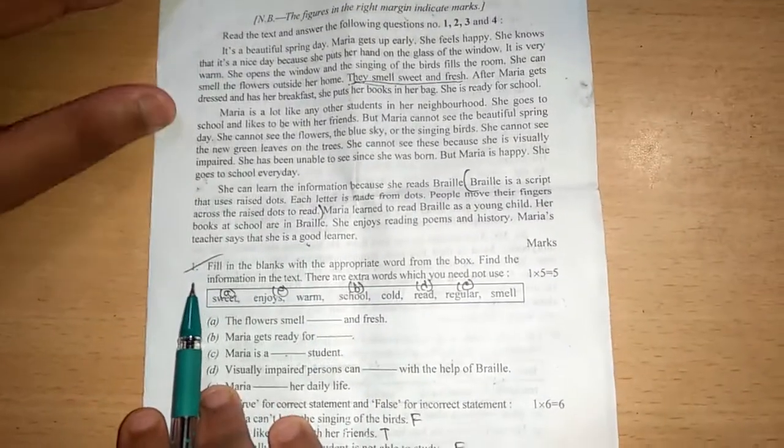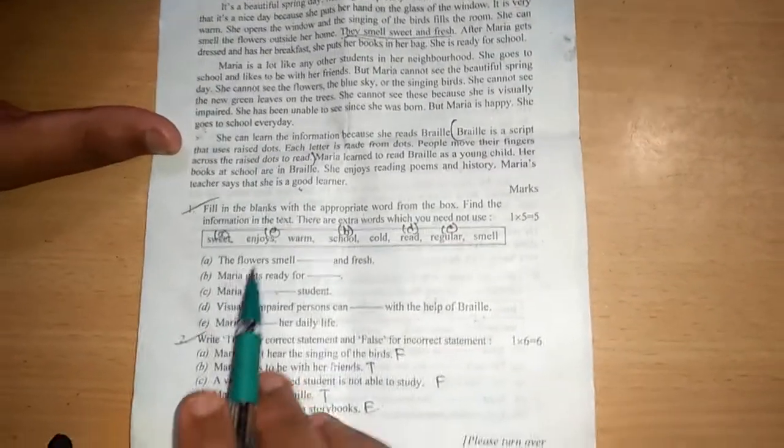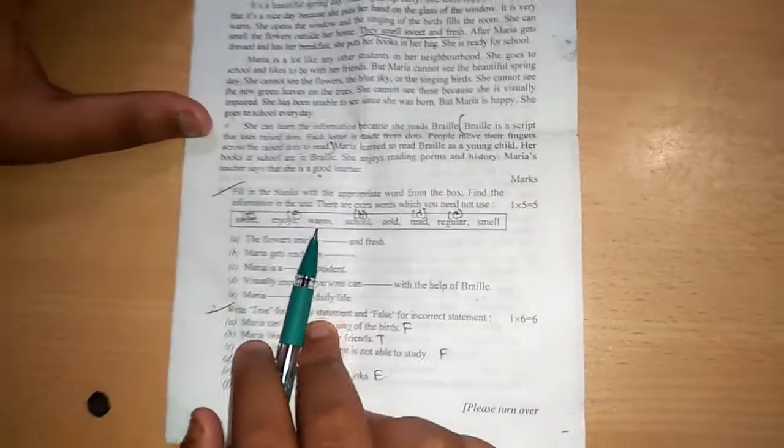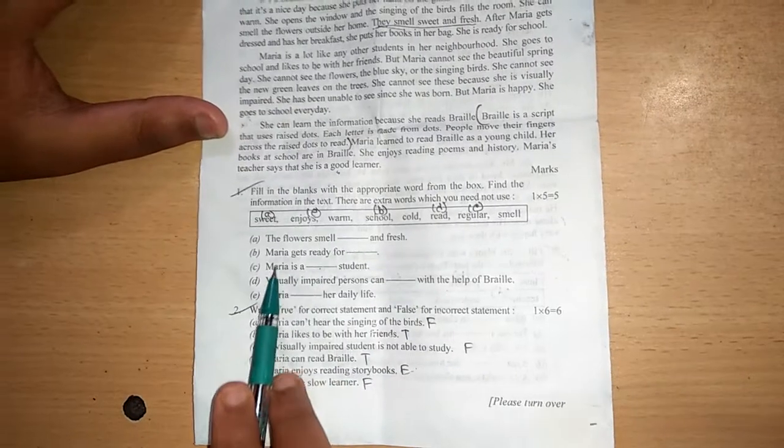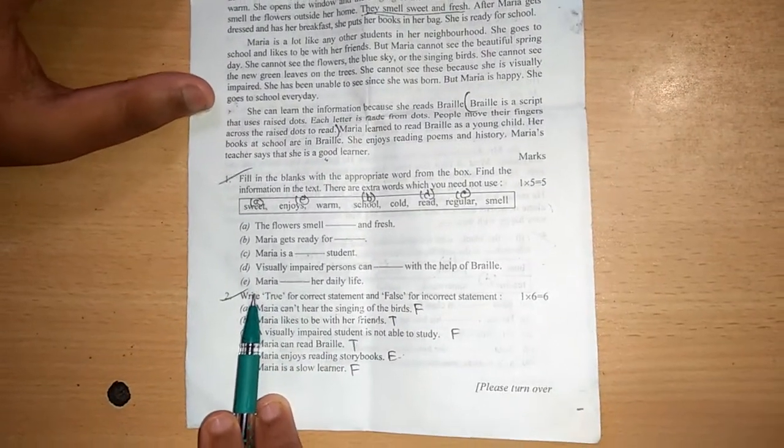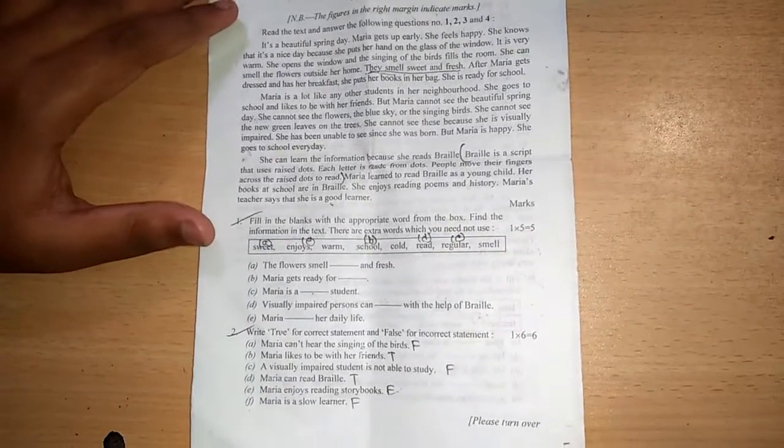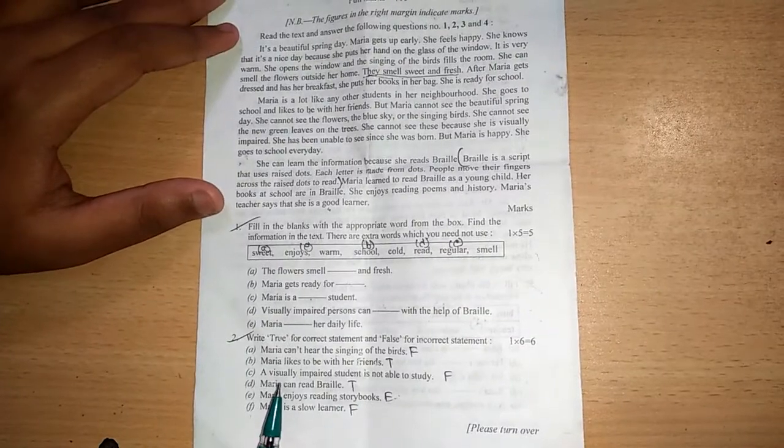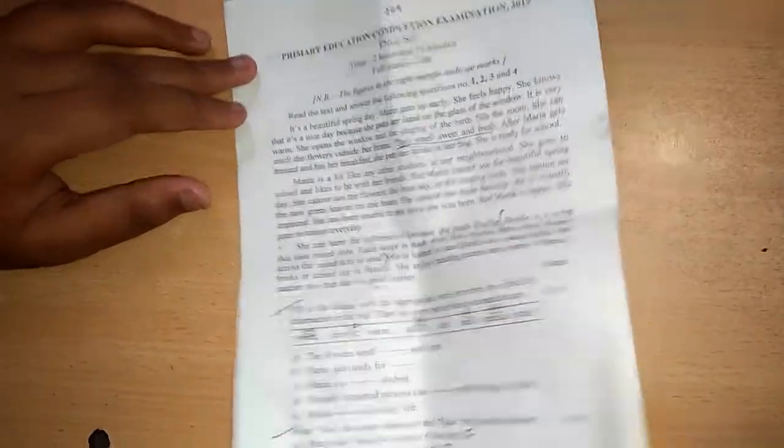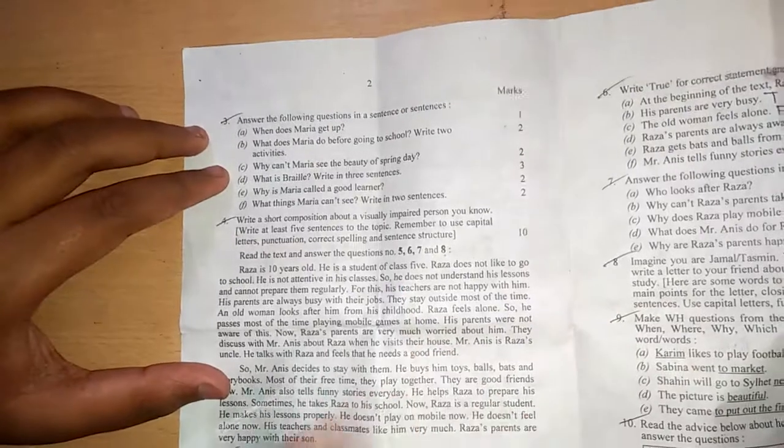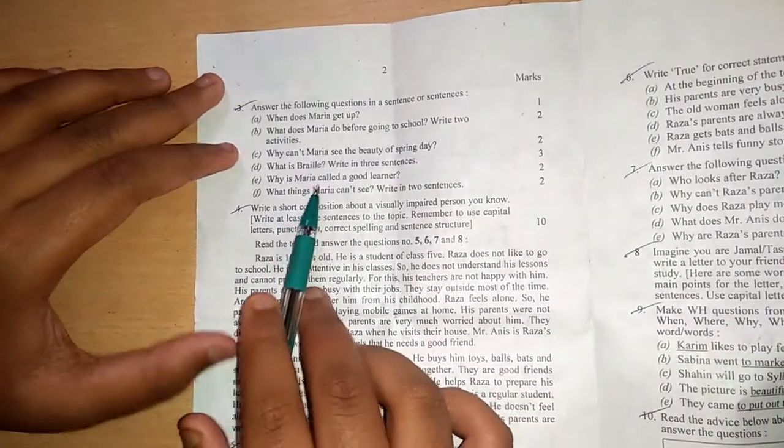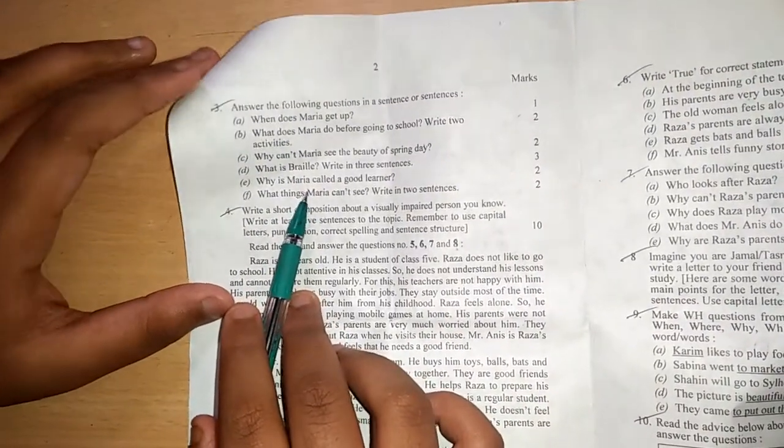From number one, word meaning can come or fill in the blanks can come. But here it can fill in the blanks. There are five fill in the blanks from the scene passages. Now number two, true false. There are one, two, three, four, five, six.